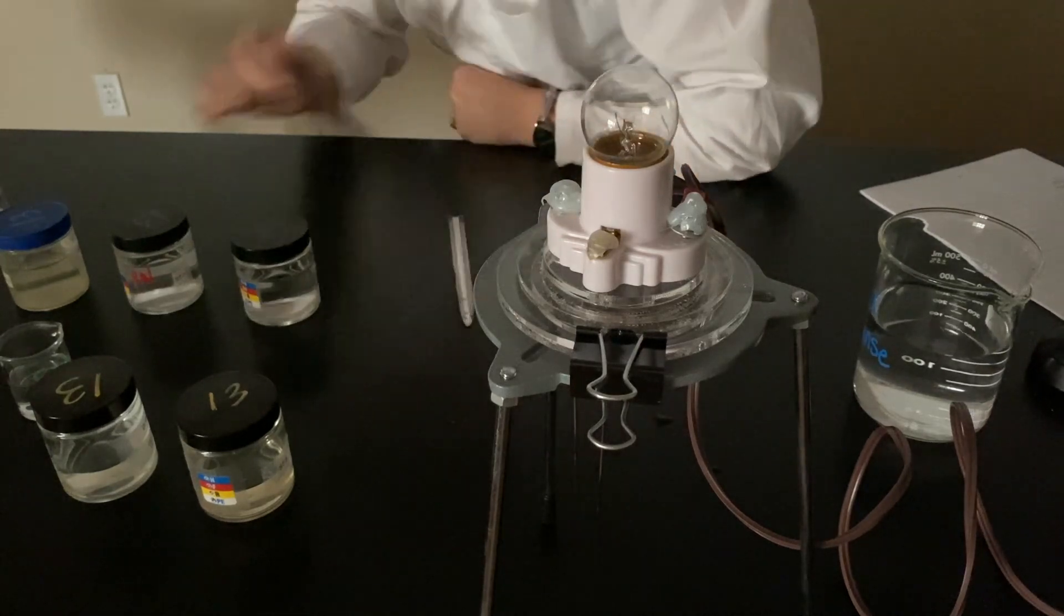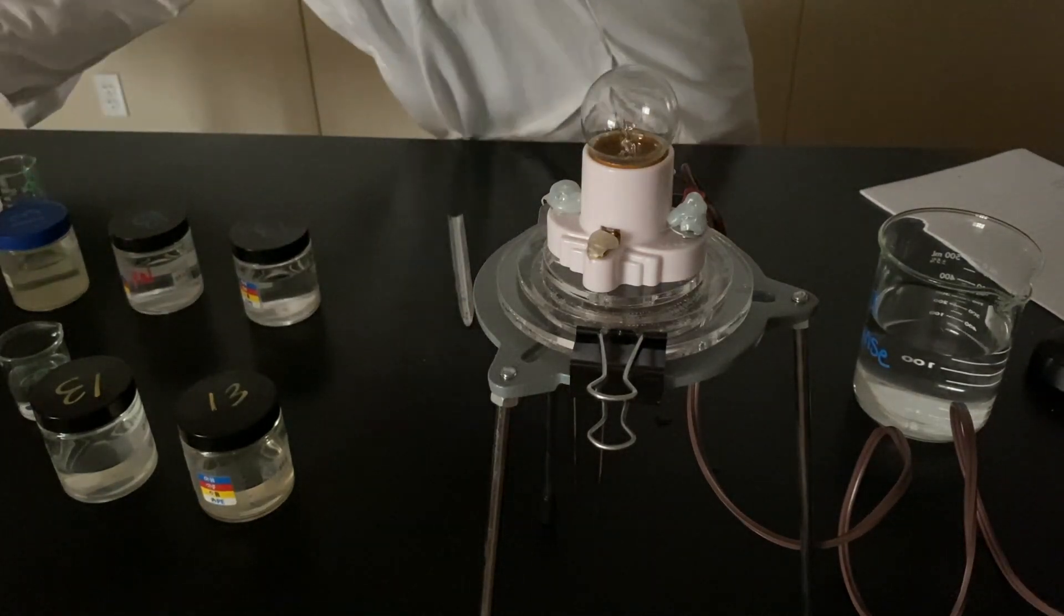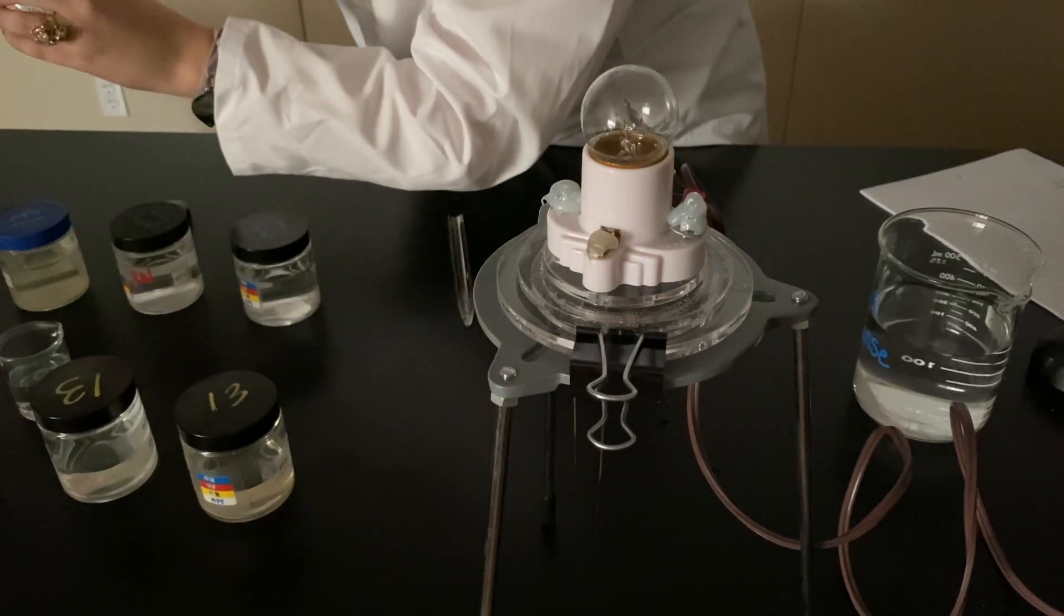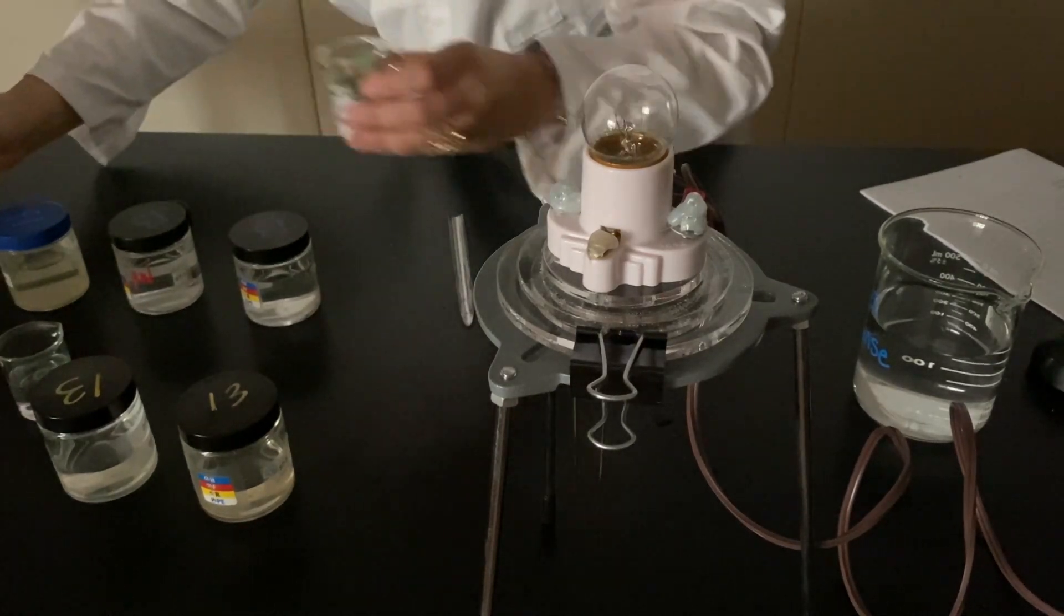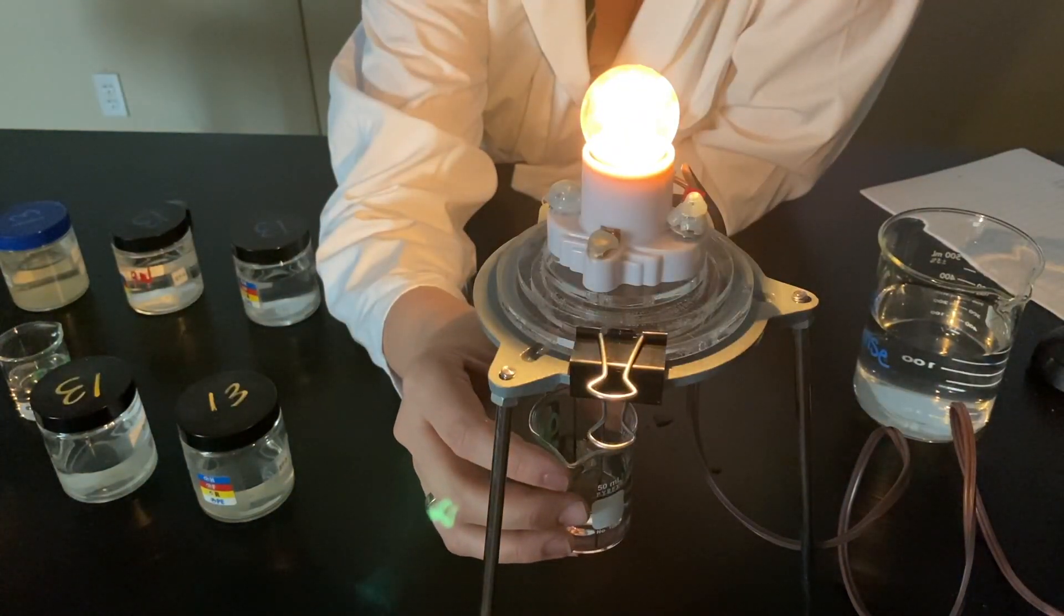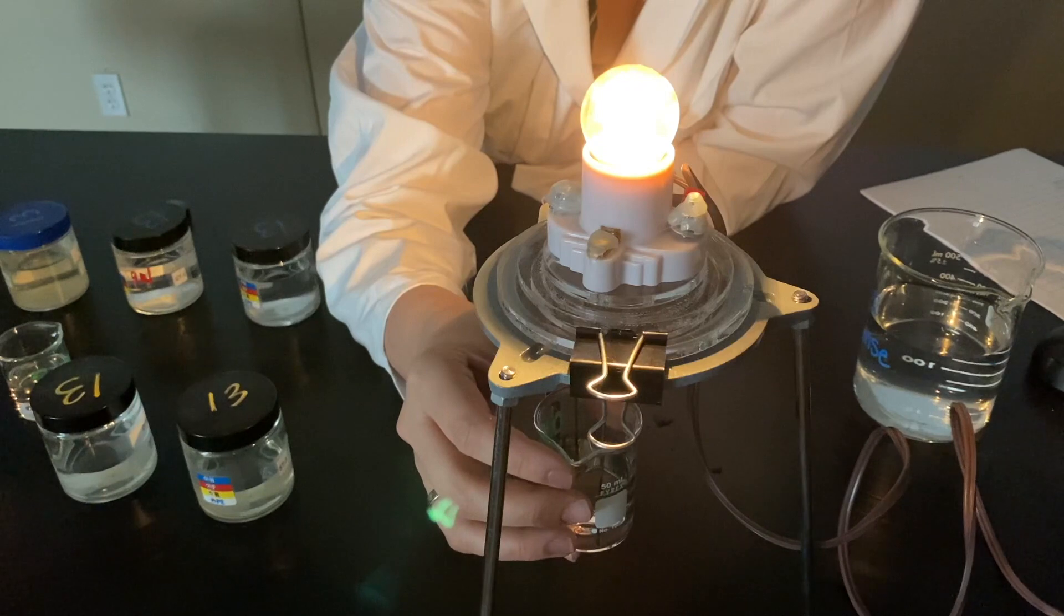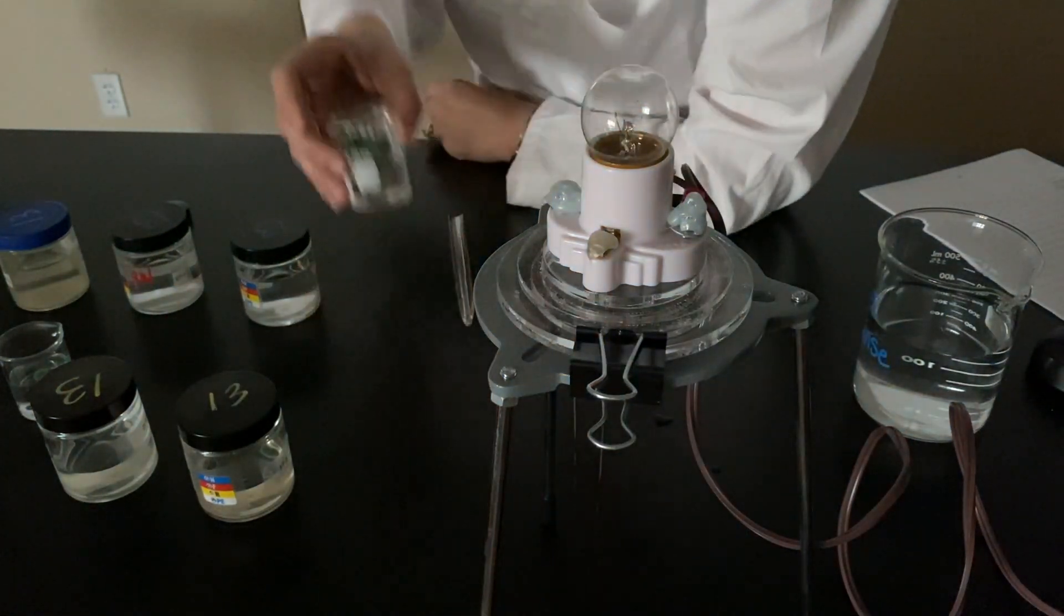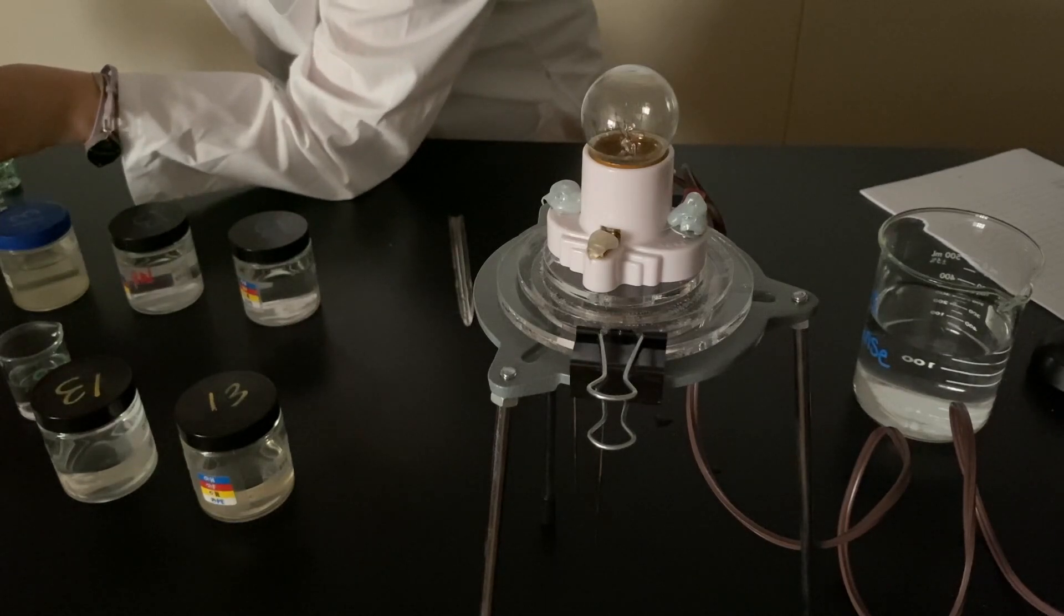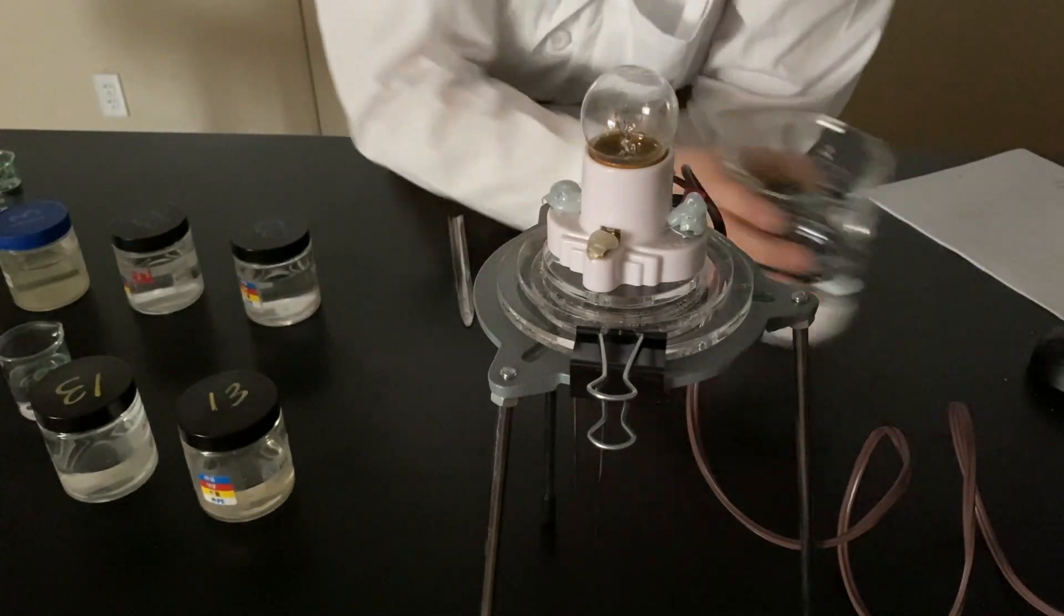All right. Then we get 0.1 molar phosphoric acid. Why did I not have this poured out already? My bad. Here we go. Phosphoric acid, 0.1 molar. Okay, so 0.1 molar. That's not very concentrated. We still see it lighting up. DI rinse.